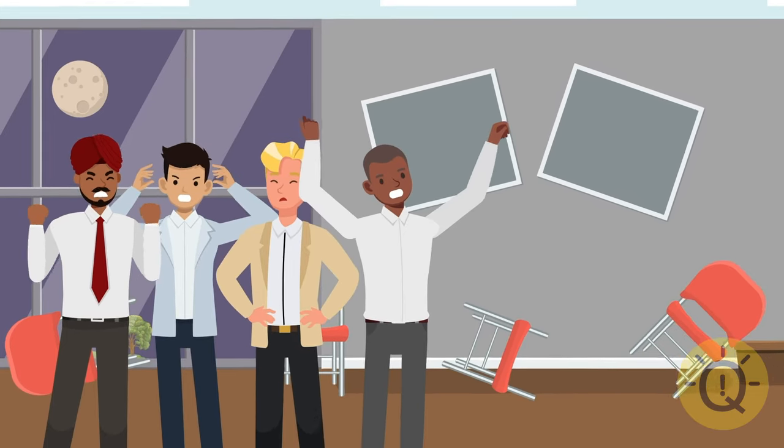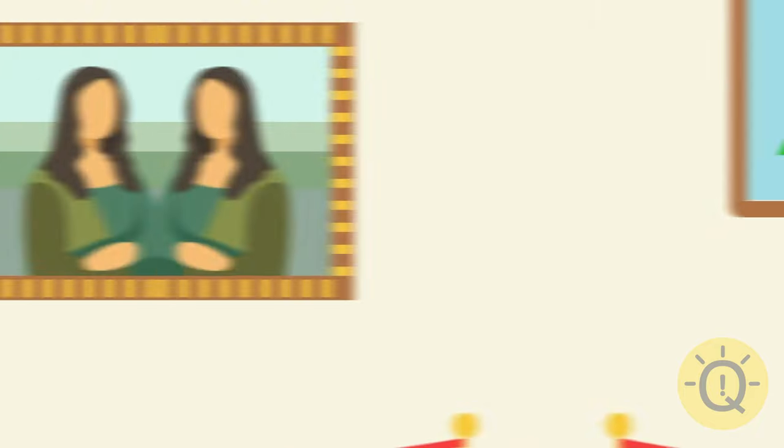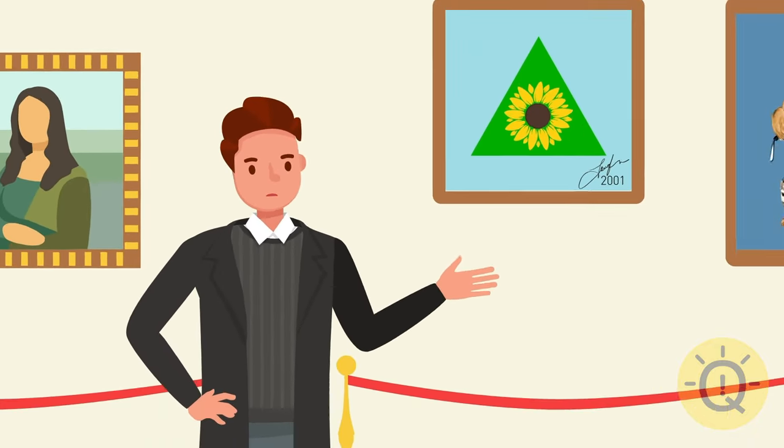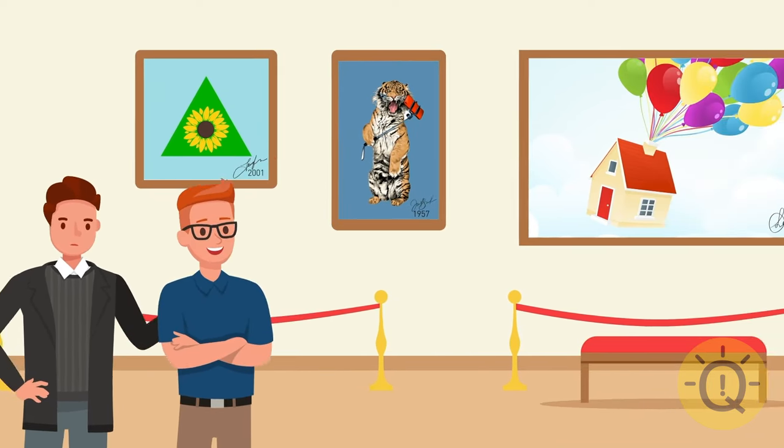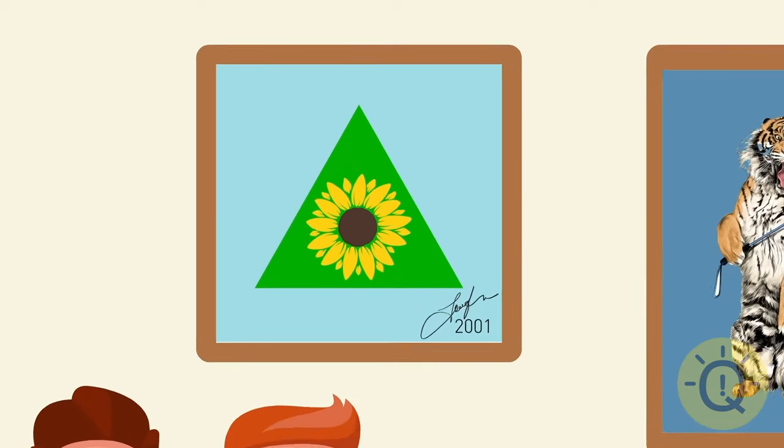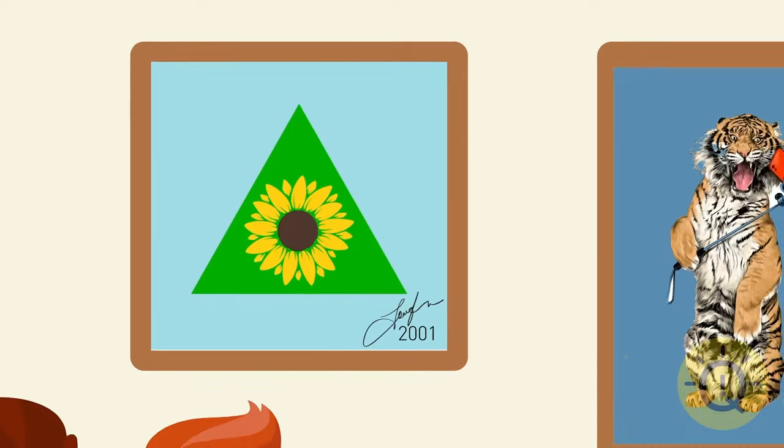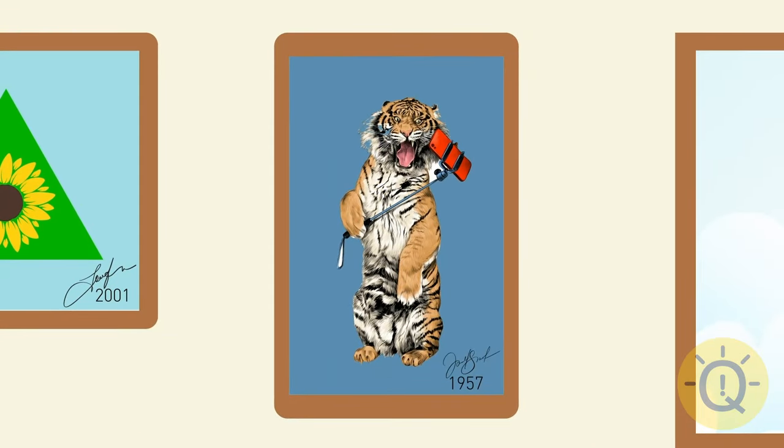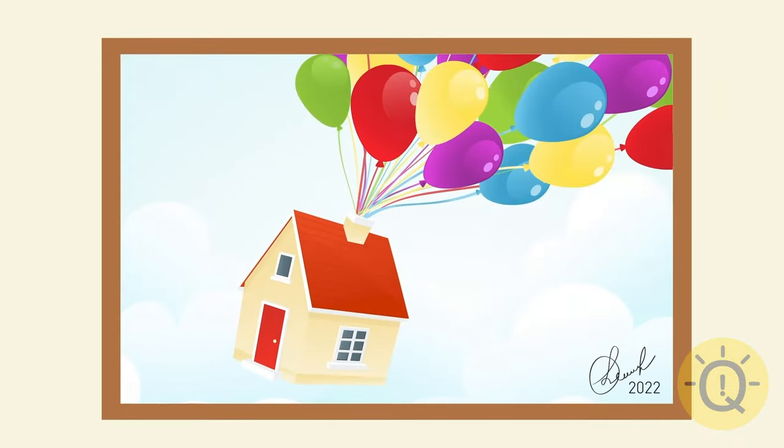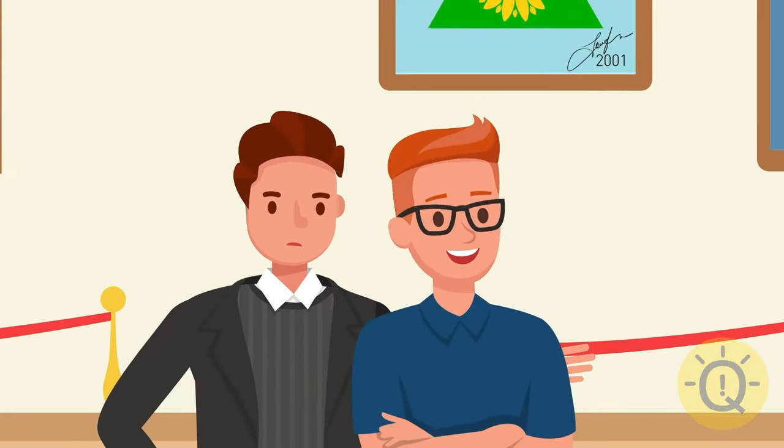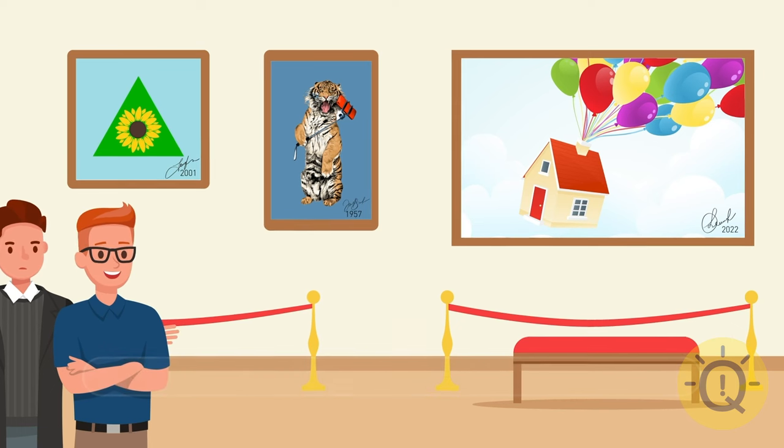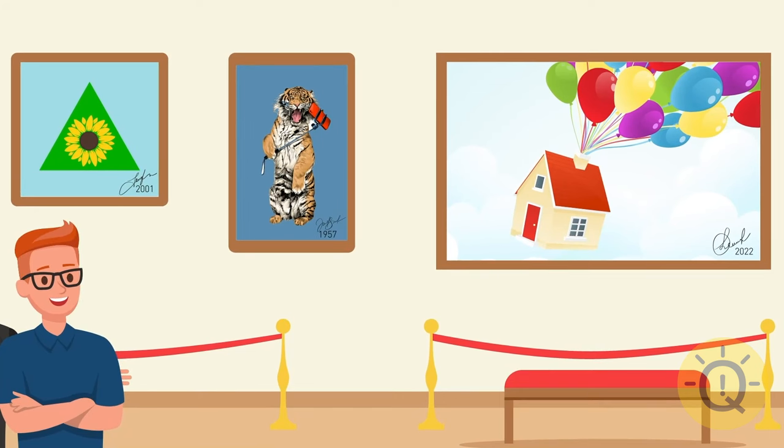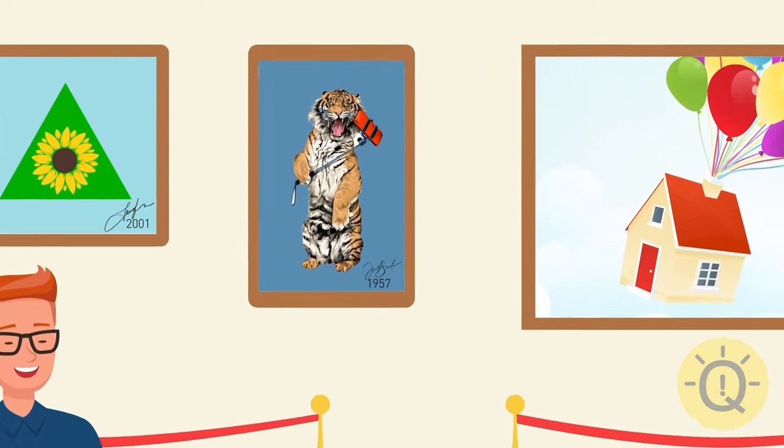A rich man comes to an exhibition of modern art. He's going to buy a new painting for his collection. The owner of the exhibition shows him three works of different artists. In the first picture there's a green triangle with a sunflower in the middle. The second painting is of a tiger taking a selfie on its phone. In the third picture there's a flying house. The collector is sure that one of the paintings is fake. Which one? Each canvas has the artist's signature and the date when it was created. The painting with a tiger is dated 1957. There were no mobile phones and selfies at that time. This picture is fake.